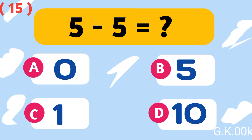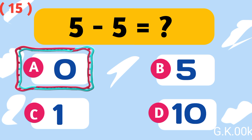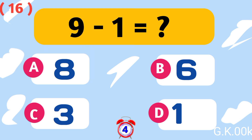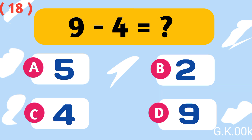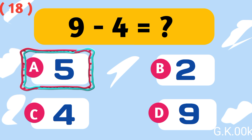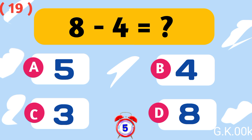5 minus 5 equals 0. 9 minus 5 equals 4. 9 minus 4 equals 5. 8 minus 4 equals 4.